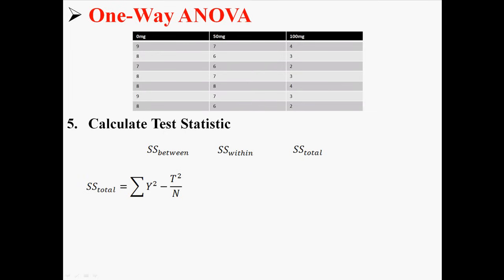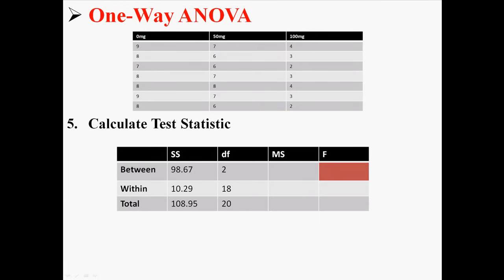And lastly we have sum of squares total. Now the nice thing about this is both parts of it, sum of y squared and t squared divided by n, we already found both of those. We can just put in what we found before. And we find a sum of squares total of 108.95. So let me go back to this ANOVA table and I'm going to put in our three sum of squares.